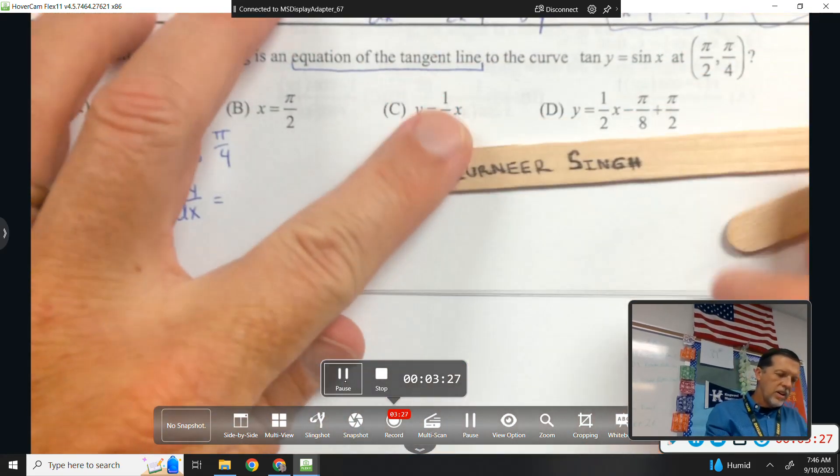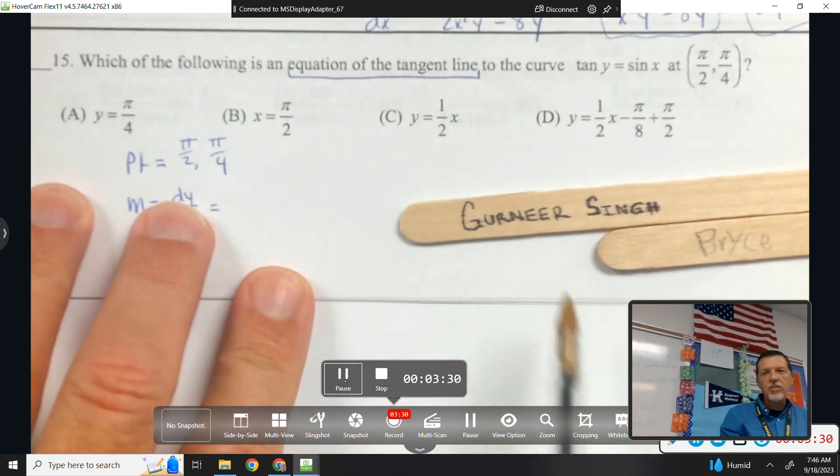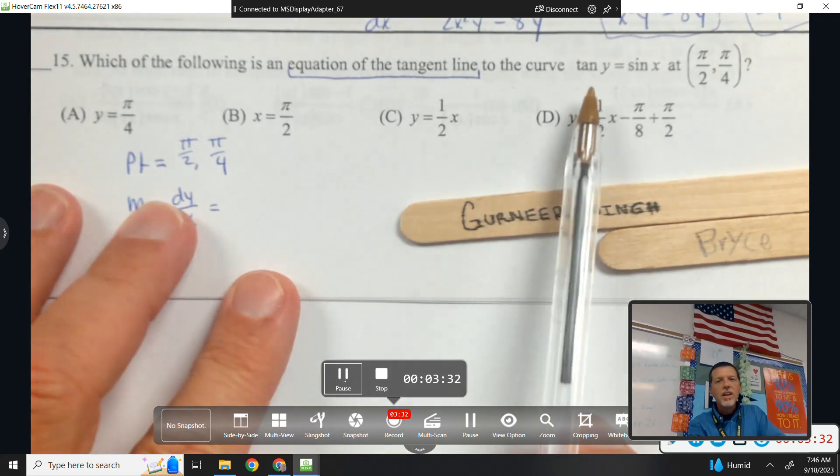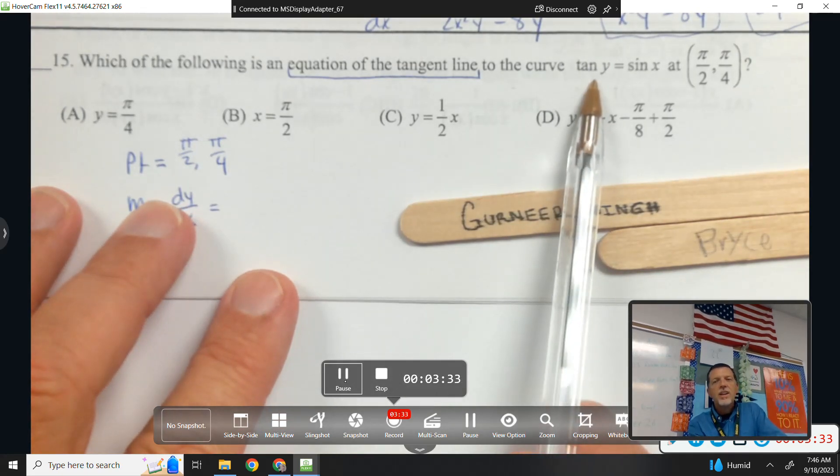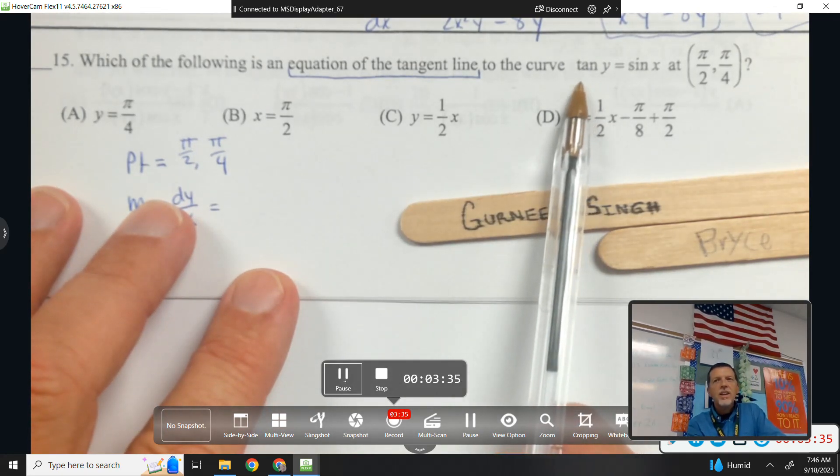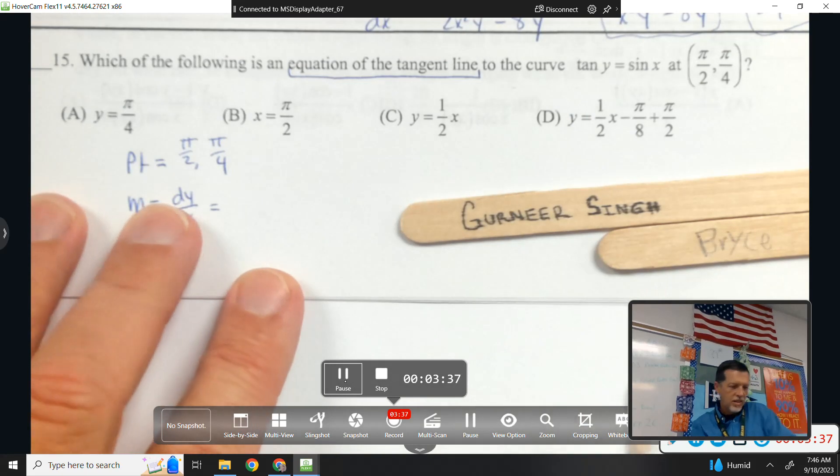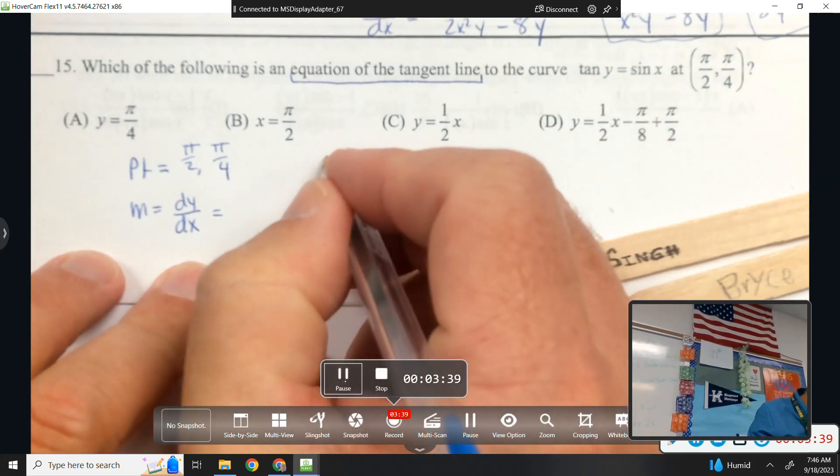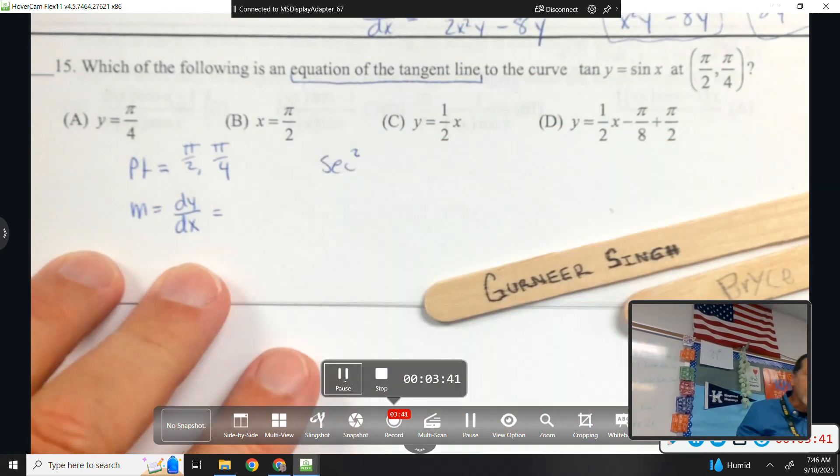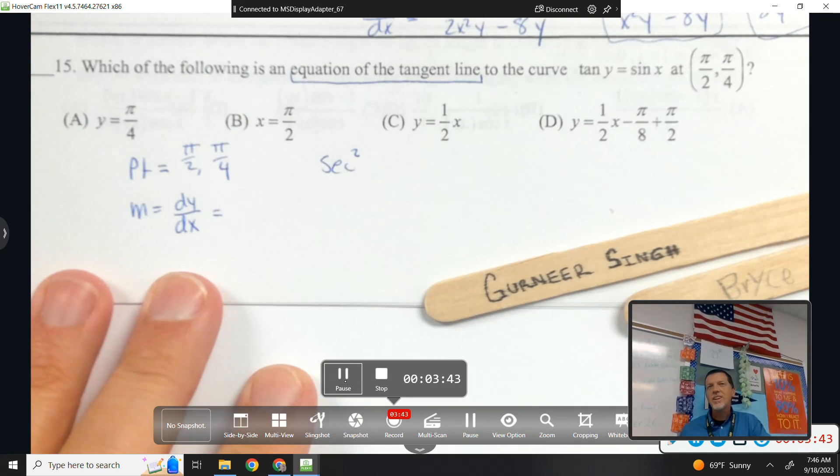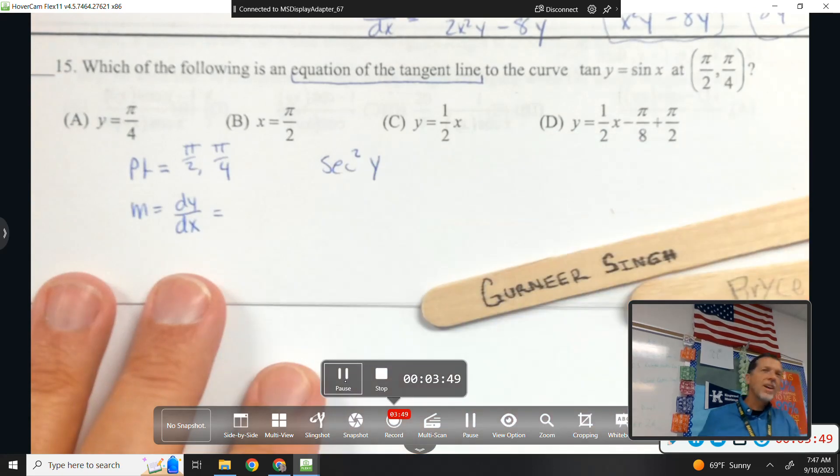How about the derivative of tangent of y? Secant squared? Okay, but I need you to be more specific because the answer is not just secant squared. I mean, that's not wrong. Secant squared of y times dy/dx.